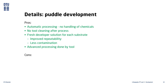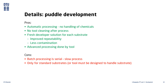One of the downsides of puddle development is that it is a serial process. Only one wafer is processed at a time, which can make it a lot slower to develop an entire carrier full of wafers compared with submersion development. Automated tools are also typically quite restrictive with the type of substrates they can accept — some can process chips while others cannot. They are also complicated machines with many failure points.